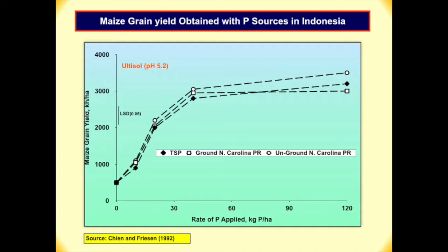This example was done in Indonesia. Comparing TSP, ground North Carolina rock, and unground North Carolina rock at pH 5.2, back in 1988. You can see that ground and unground highly reactive North Carolina rock and TSP all performed more or less the same. So for highly reactive phosphate rock, you don't have to finely grind it. But solubility is much more sensitive to the particle size of phosphate rock.